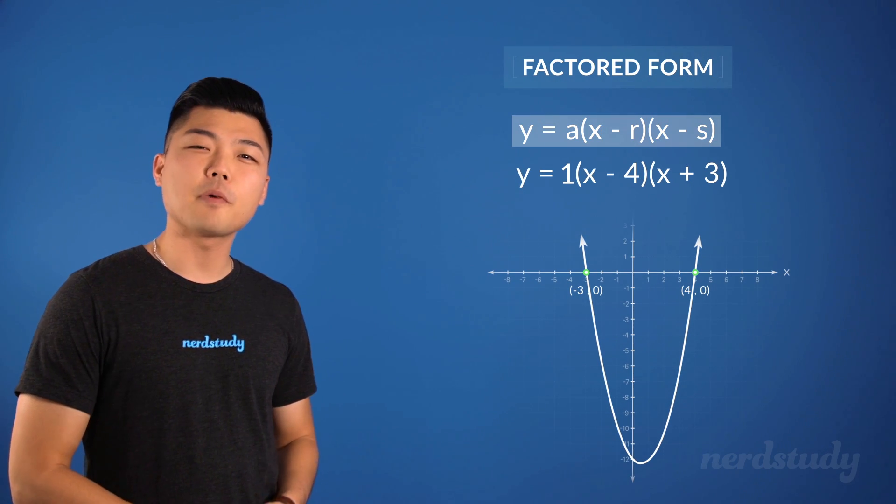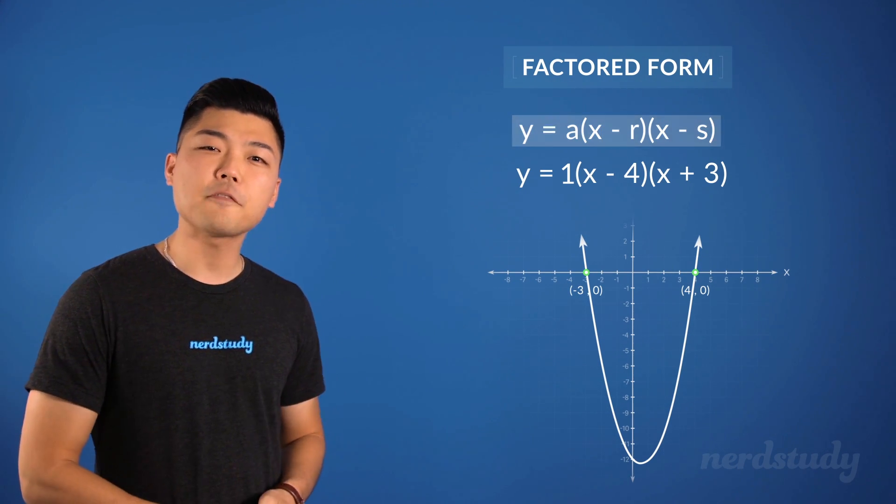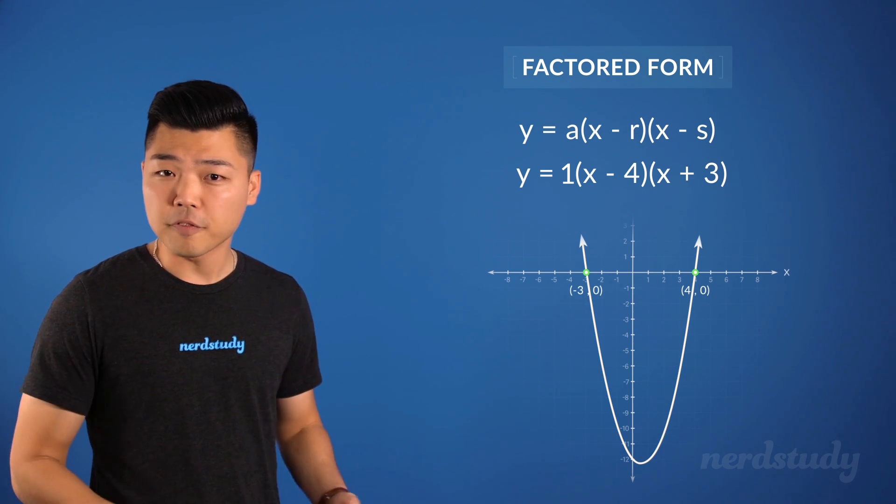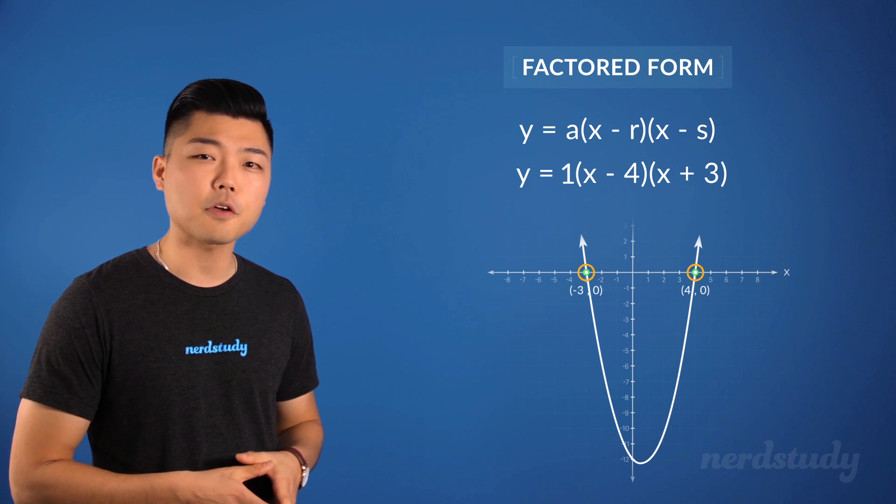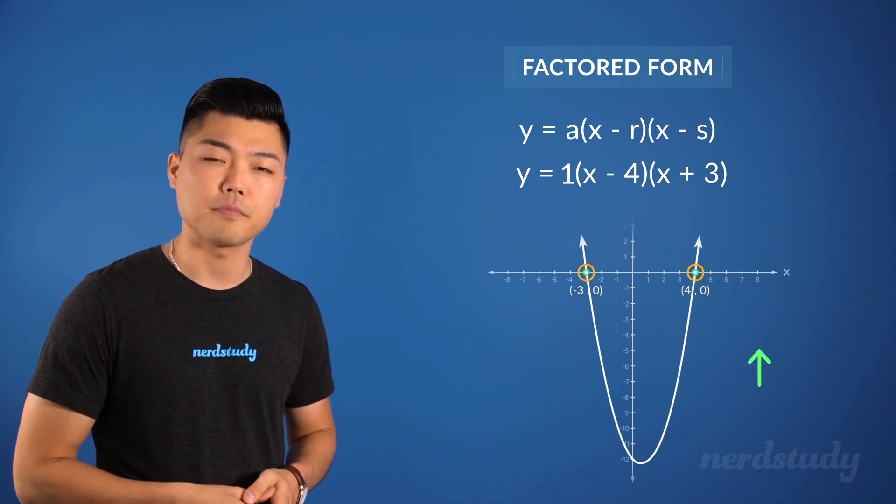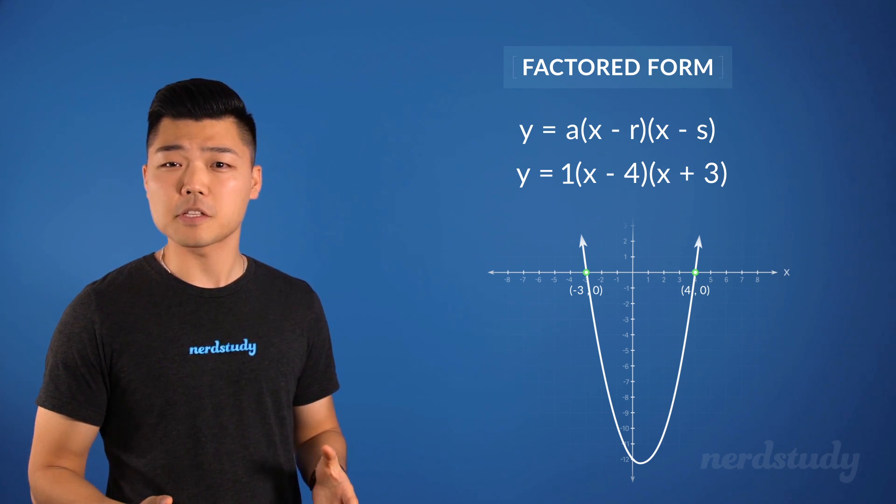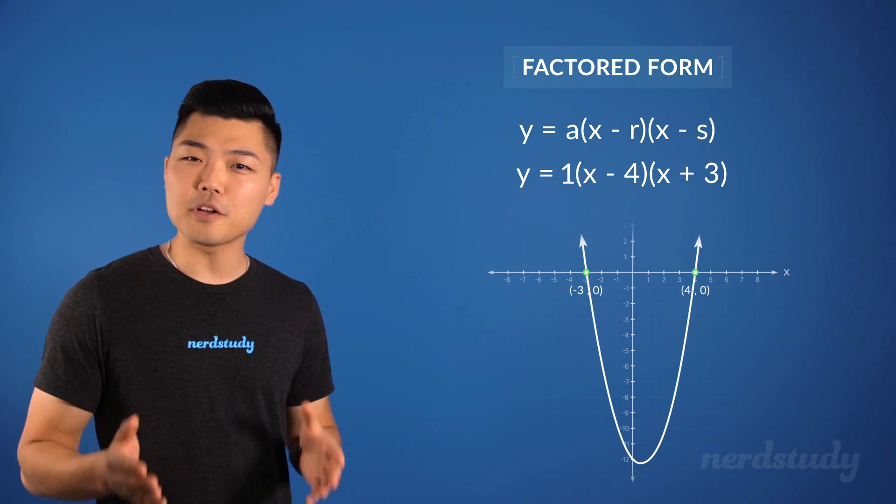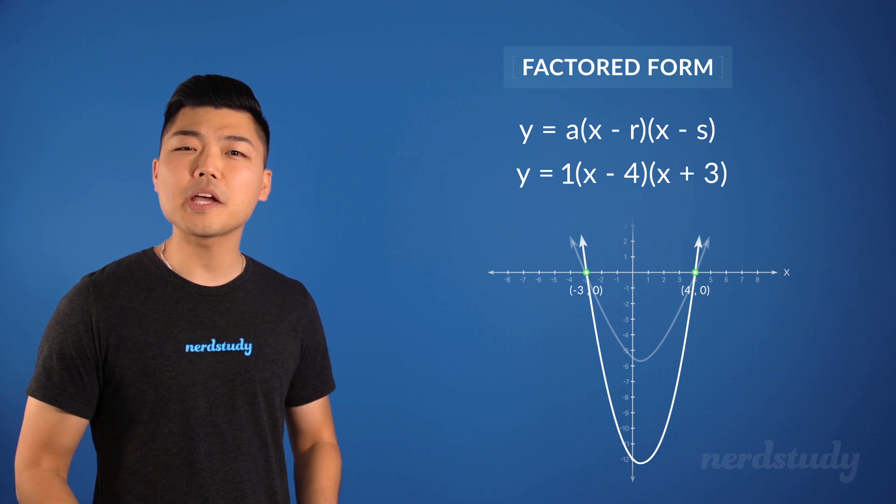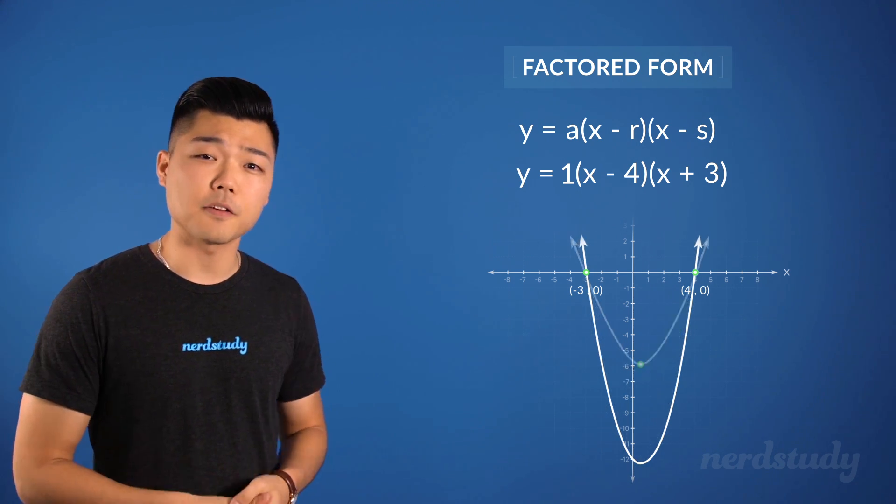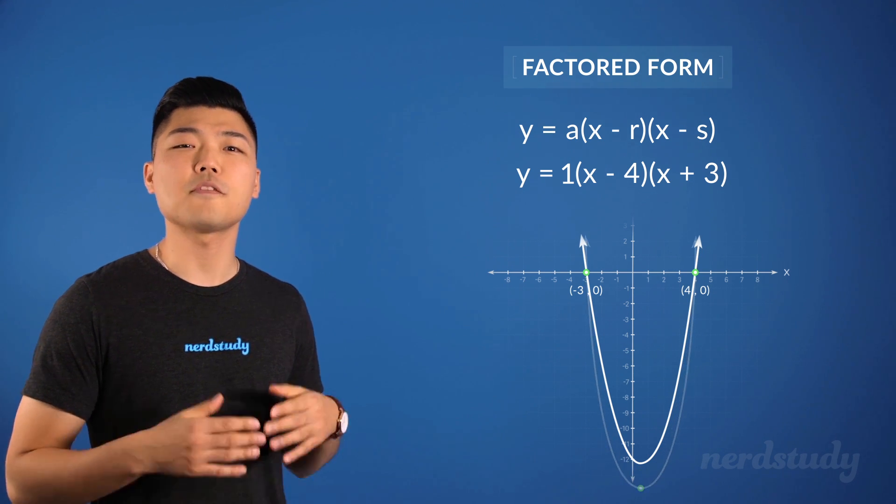Therefore, the factored form of a quadratic formula can give us the general idea of what the graph will look like by providing us with the zeros of the graph and the direction. And we say general idea because although we have this information, we still do not know for sure how wide or narrow the graph is, and where exactly the vertex lies using the factored form.